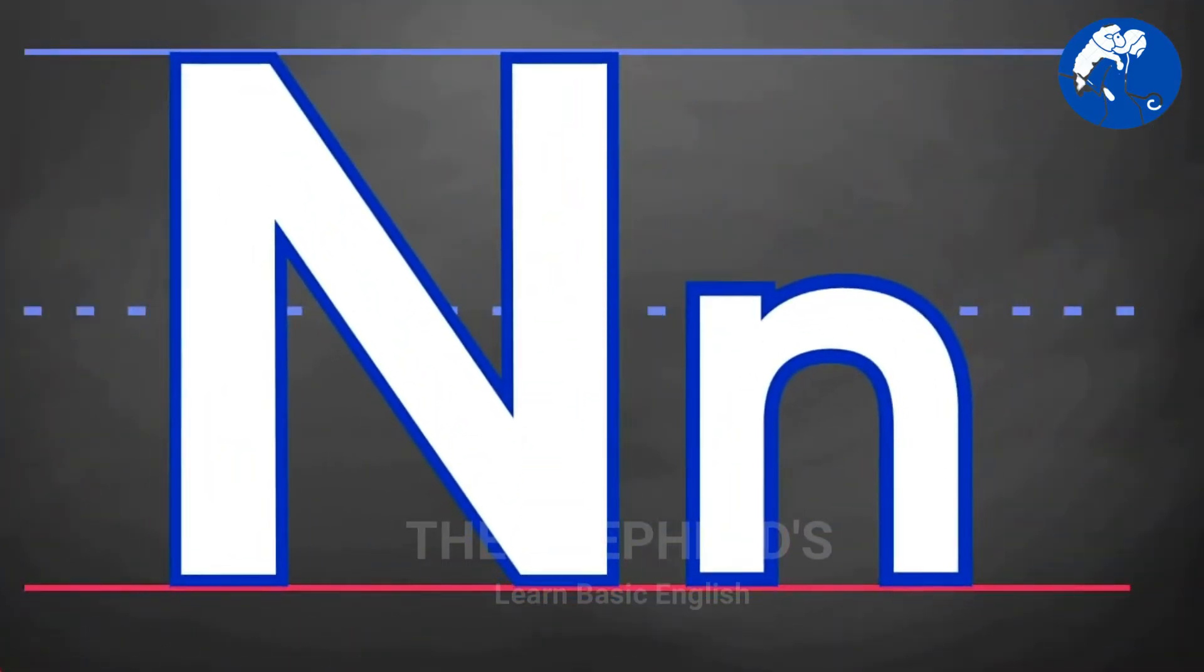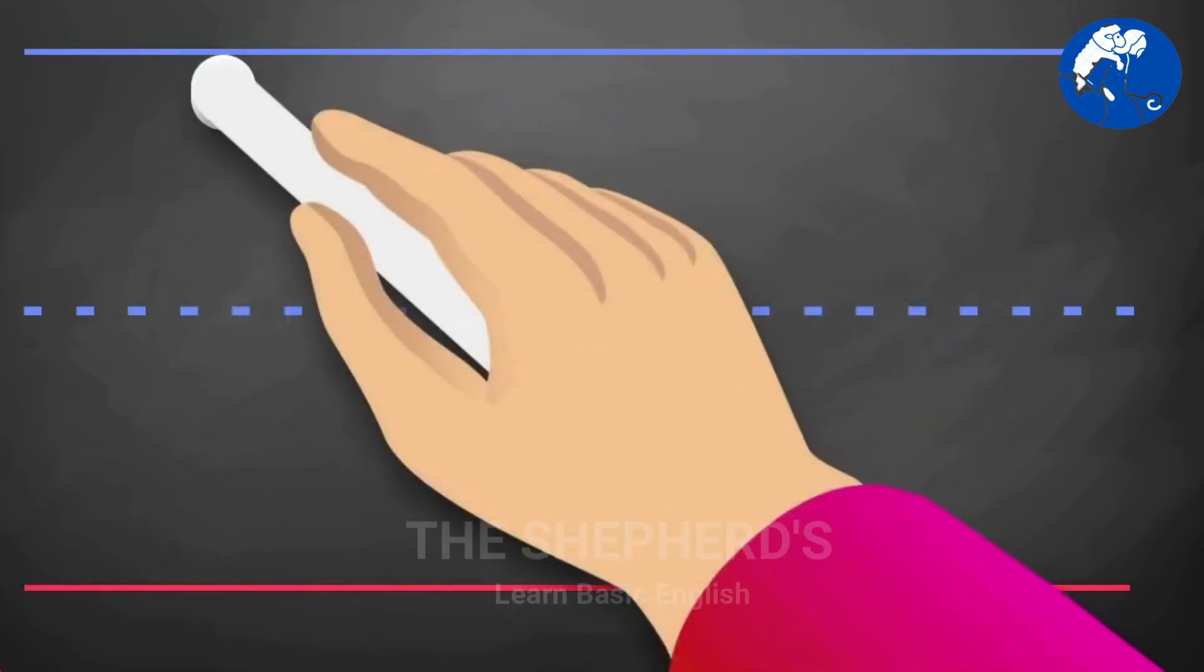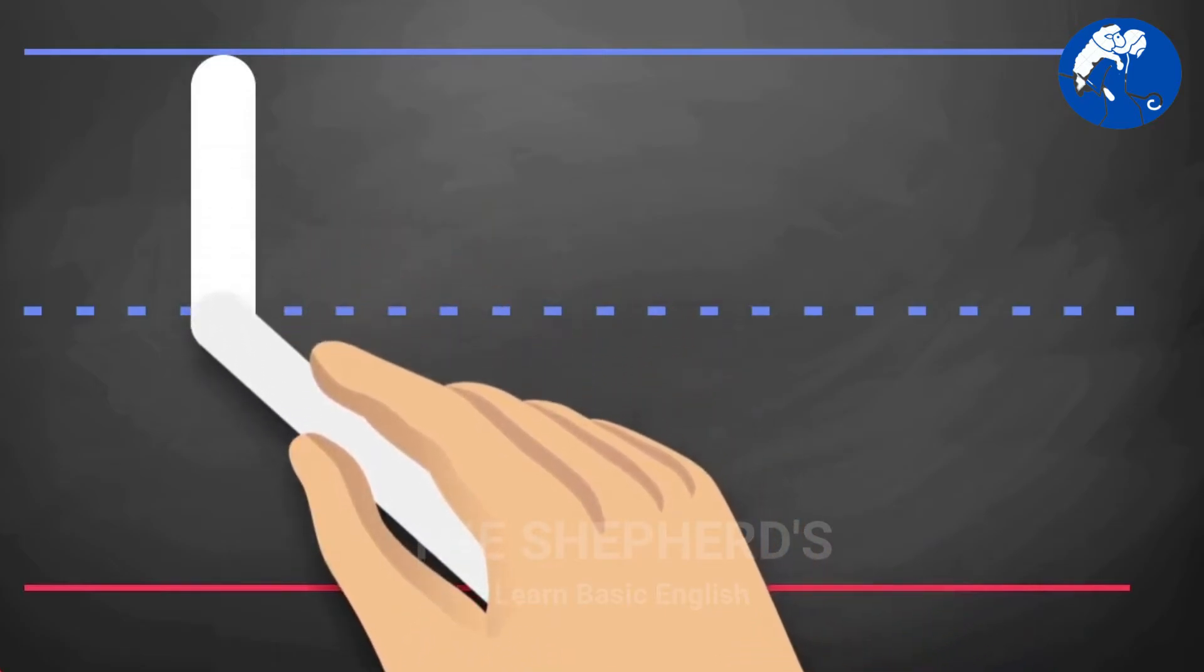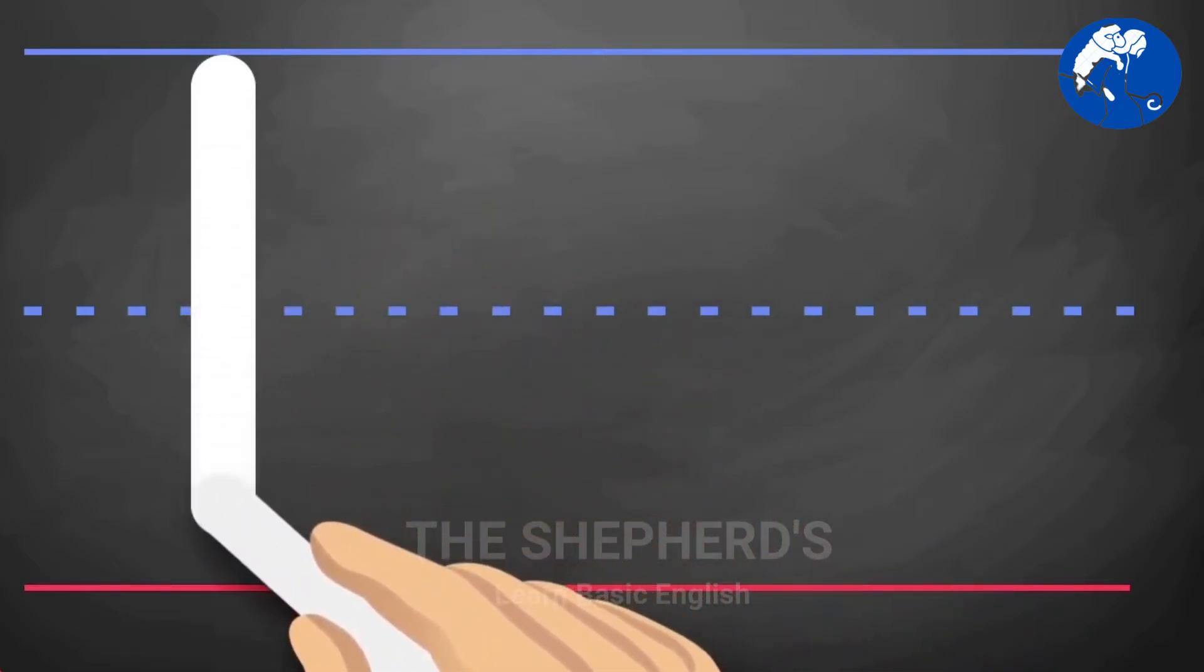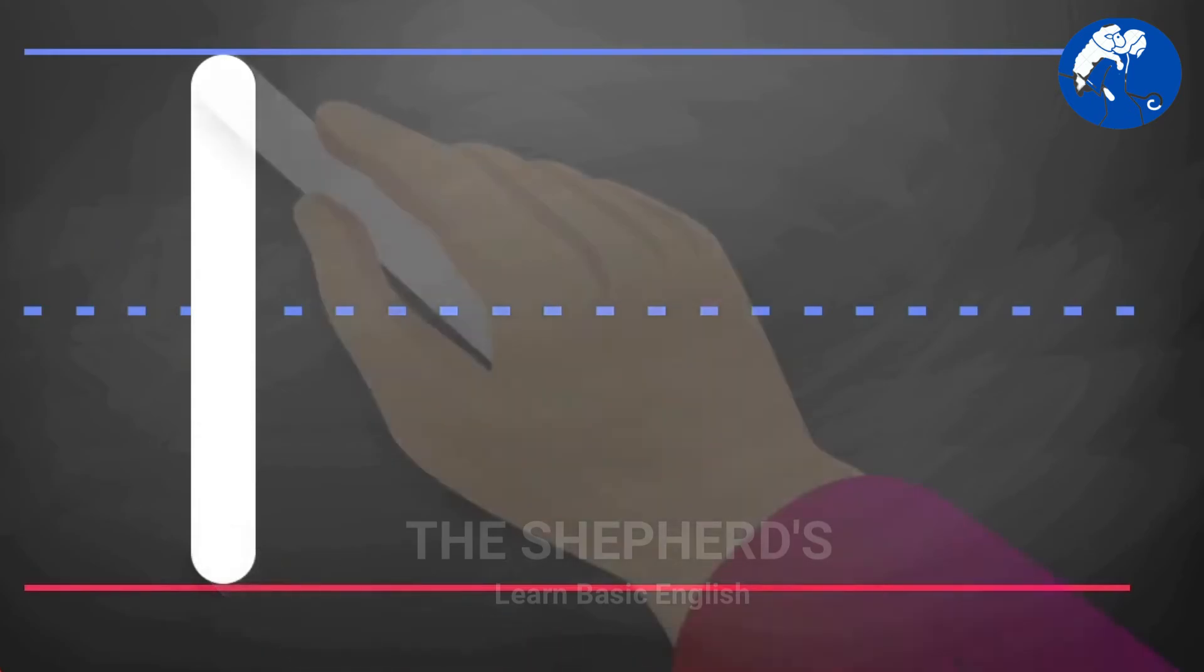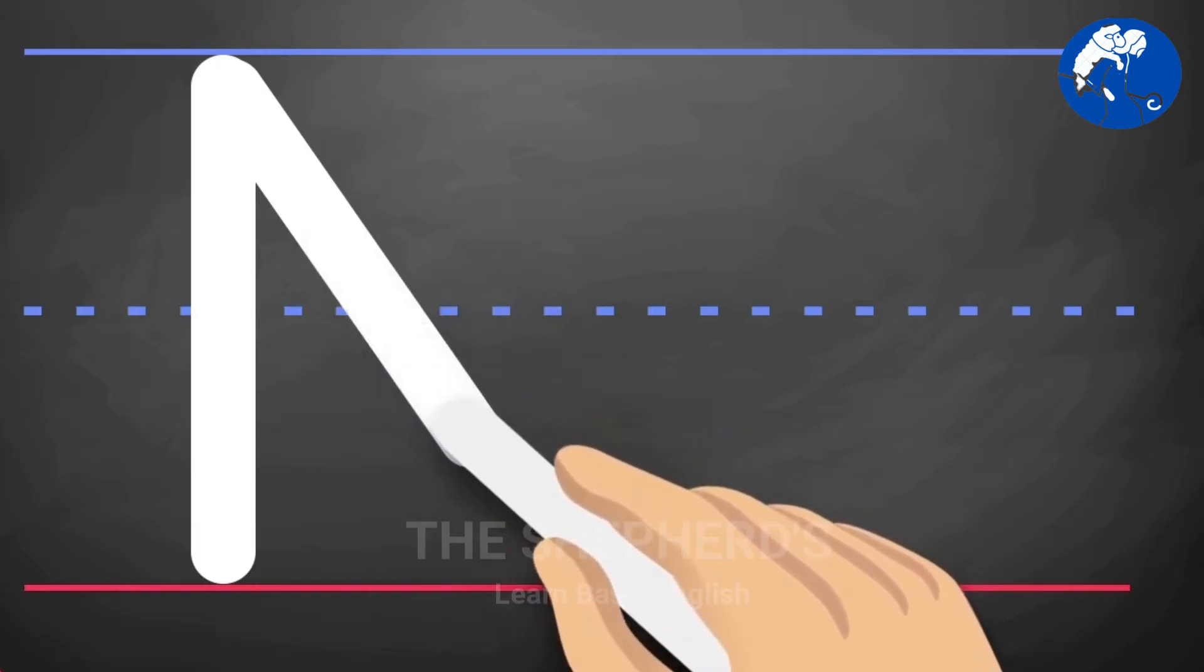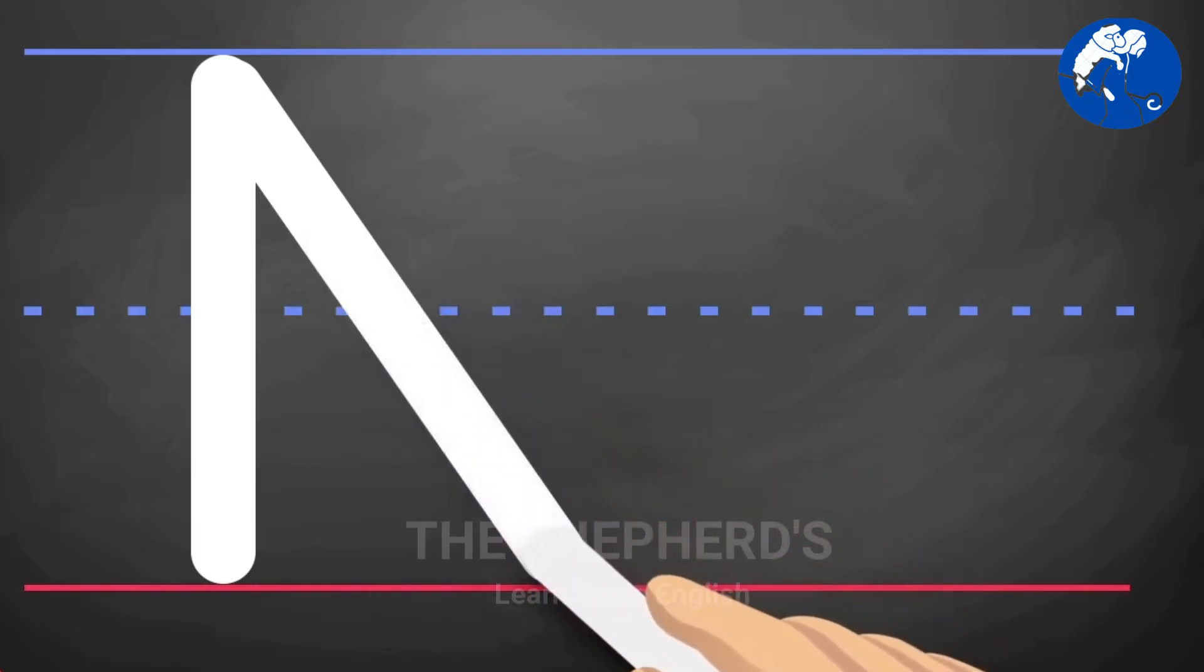The letter N. Uppercase N: From the top, pull down. Slant down and pull up.